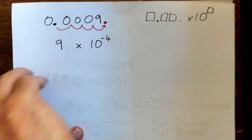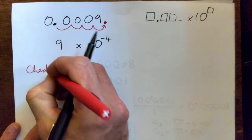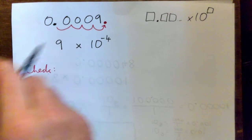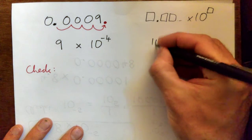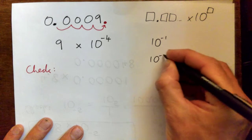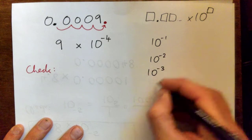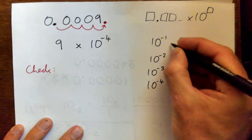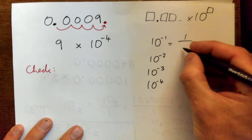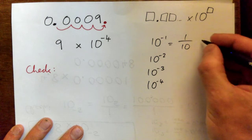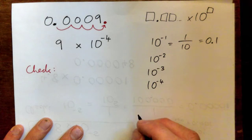The answer is 9 times 10 to the power of negative 4. Now we're going to check that. To do so, let's quickly review our negative powers of 10. So 10 to the negative 1 is 1 over 10 to the power of 1, which is 1 over 10, or 0.1.